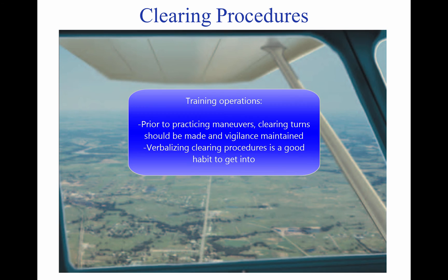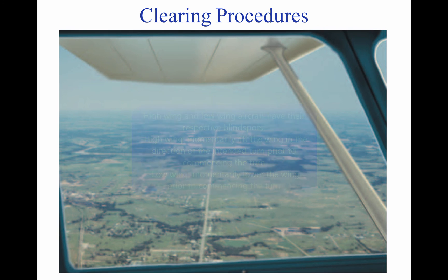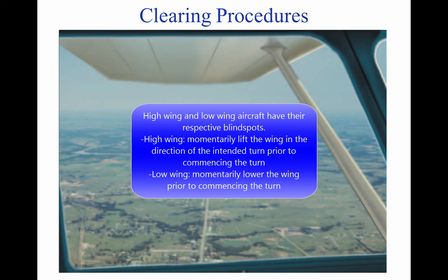Training Operations. Vigilance should be maintained and clearing turns should be made prior to a practice maneuver. During instruction, the pilot should be asked to verbalize the clearing procedures — call out clear left, right, above, and below. High wing and low wing aircraft have their respective blind spots. The pilot of a high wing aircraft should momentarily raise the wing in the direction of the intended turn and look for traffic prior to commencing the turn. The pilot of a low wing aircraft should momentarily lower the wing and look for traffic prior to commencing the turn.